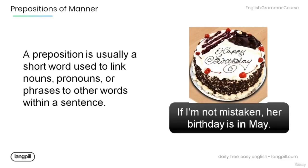A preposition is usually a short word used to link nouns, pronouns, or phrases to other words within a sentence. Have a look at the example below. If I'm not mistaken, her birthday is in May. The word 'in' in the sentence is a preposition, and it is used to link the noun 'May' to 'her birthday'.